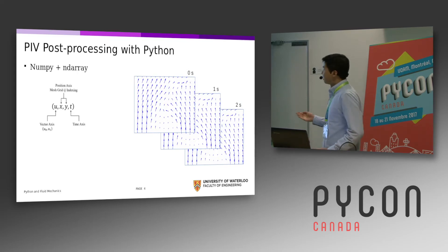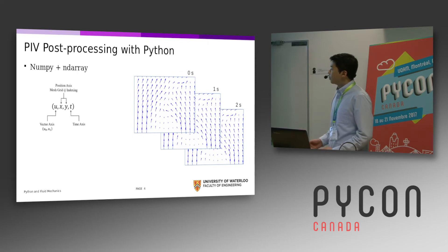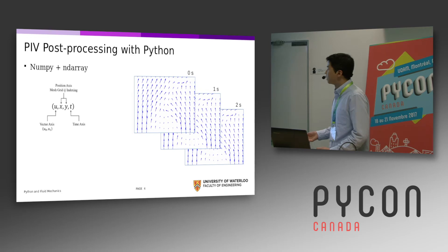PIV produces these vector fields and they occur over different spatial dimensions and different time dimensions. The way to handle this in Python is with the classic scientific package NumPy, because NumPy essentially stores this kind of information with n-dimensional arrays.